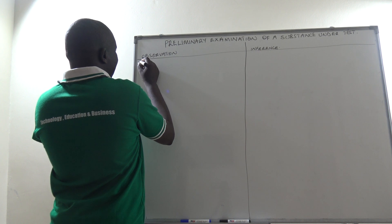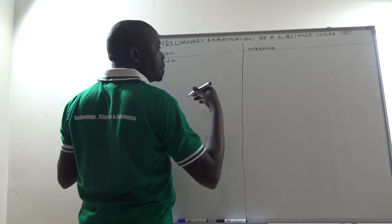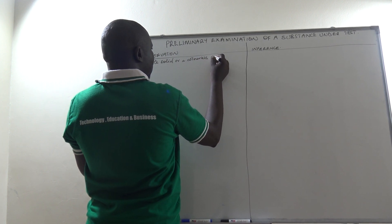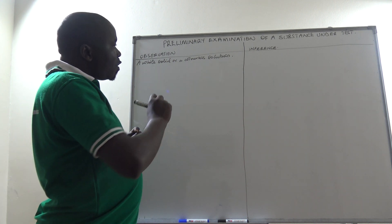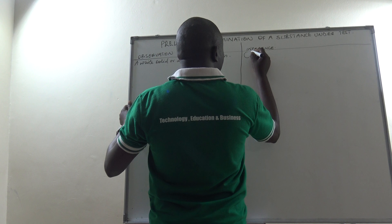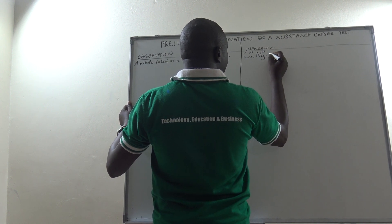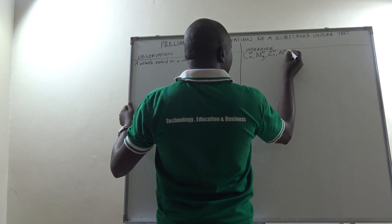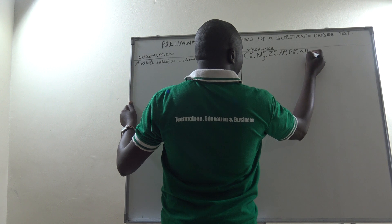Firstly, if your substance is a white solid, or possibly if you have prepared the solution and it looks colorless, then there are some ions that are likely to be present. These ions are: the calcium ion, magnesium ion, zinc ion, aluminum ion, lead two ion, and ammonium ion.